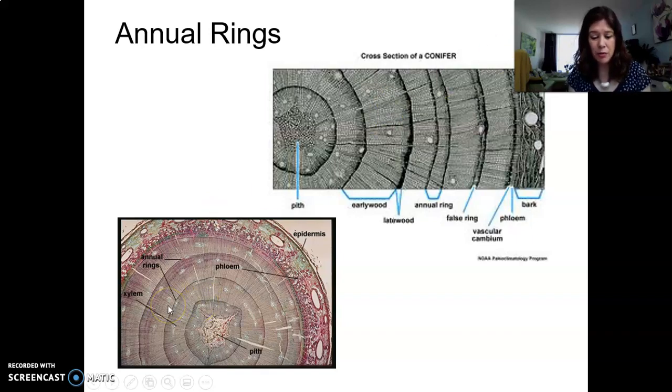So remember, xylem for water and minerals from the roots to the leaves, and phloem from the leaves to the rest of the tree and from the leaves to the roots containing food.